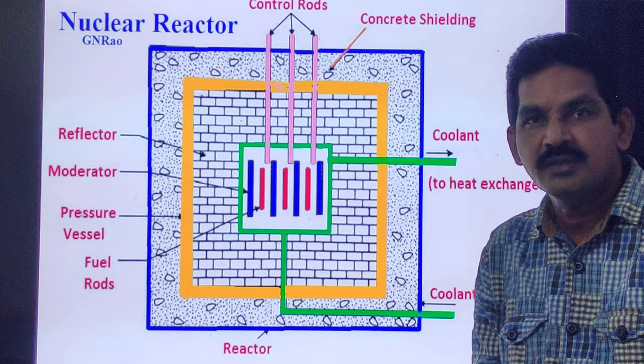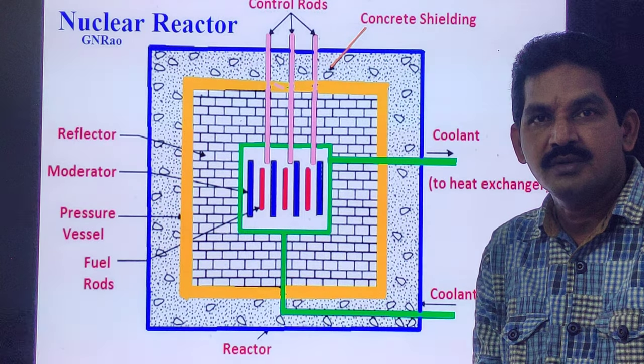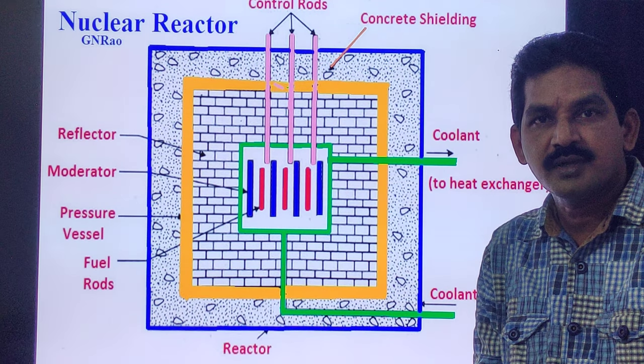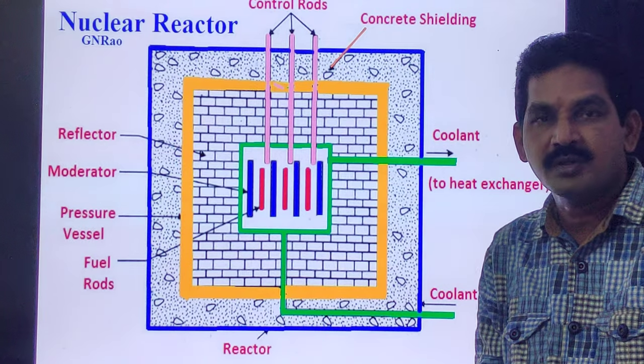The heat liberated in the reactor is taken up by the coolant circulating through the core. Hot coolant leaves the reactor at the top and flows into the steam generator.